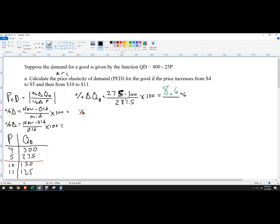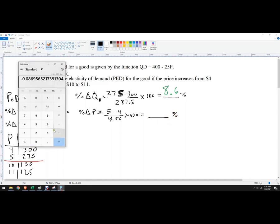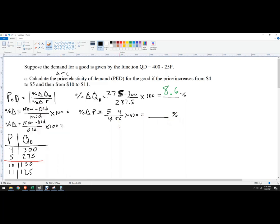Now I want to do percent change in price. So this is increasing the price to 5, so 5 minus 4. That one's easy, I can do that in my head. It's 4.50, that's the midpoint between those two numbers, times 100. So that's 1 over 4.50, and I get 22 percent.